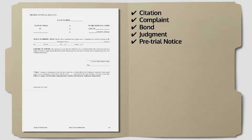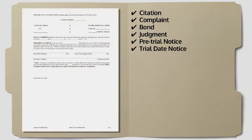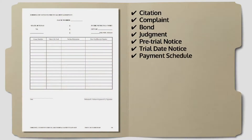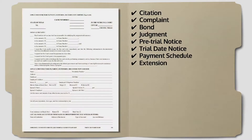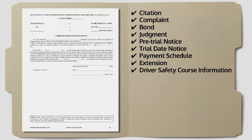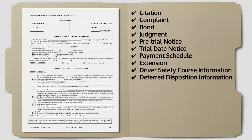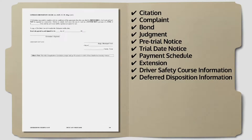Additional items include pretrial court notices if applicable, trial date notices if appropriate, a payment schedule with due dates and the amount to be paid, extensions for payments and or court settings. If the defendant elected to take a driving safety course, then all the pertinent papers regarding that court order need to be in the case file. If the defendant is granted deferred disposition, then those pertinent documents should also be included in the case file.